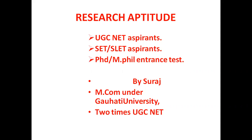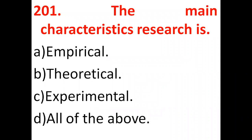The first question: what is the main characteristic of research? Options given are: empirical research, theoretical research, experimental research, and all of the above. Research can be empirical, theoretical, experimental, and also includes replicability, accuracy, reliability, and validity. So all of the above is the correct answer — option D.